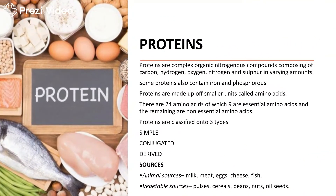Talking about proteins, the most desired content for growing children and adults is protein, because it helps repair and build up tissues. Proteins are complex organic nitrogenous compounds composed of carbon, hydrogen, oxygen, nitrogen, and sulfur in varying amounts. There are basically 24 amino acids, out of which nine are essential amino acids and the remaining are non-essential amino acids. Various food sources from animal and vegetable sources are listed.